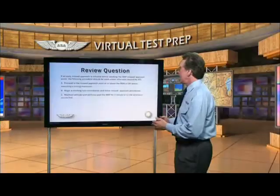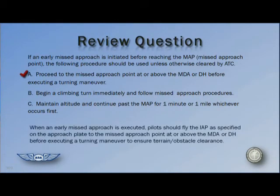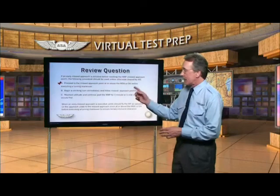Taking time again for another question: if an early missed approach is initiated before reaching the MAP or missed approach point, the following procedure should be used unless otherwise cleared by ATC. The correct answer is A. When an early missed approach is executed, pilots should fly the IAP as specified on the approach plate to the missed approach point at or above the MDA or DH before executing a turning maneuver, to ensure terrain and obstacle clearance.